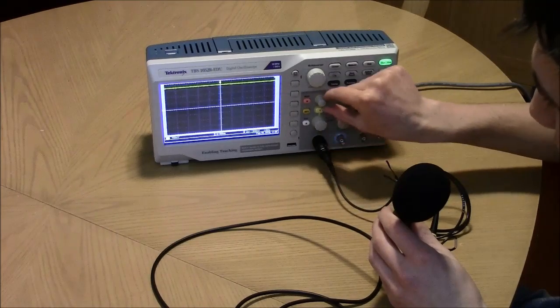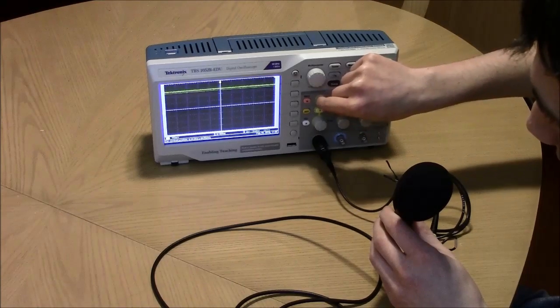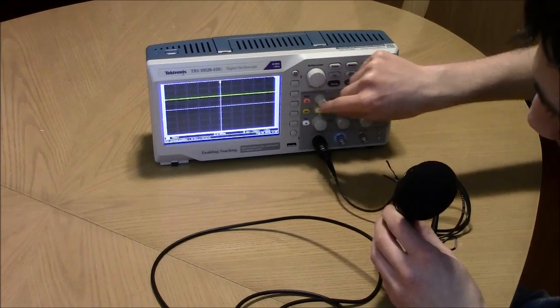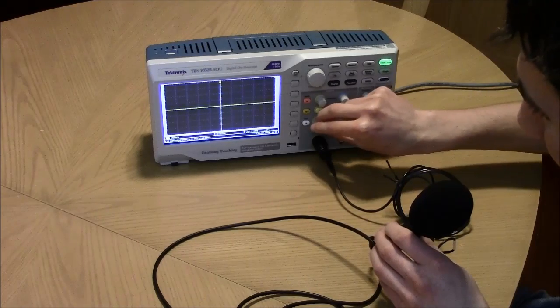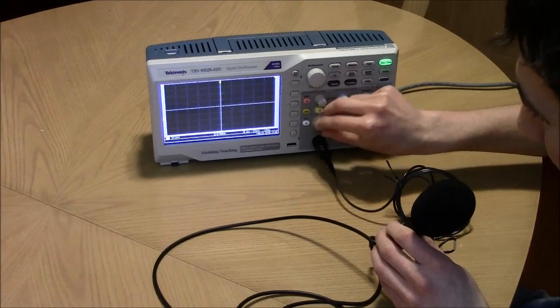So we can use this position knob to lower the line so it's a bit easier to see. And we'll make the divisions even smaller.